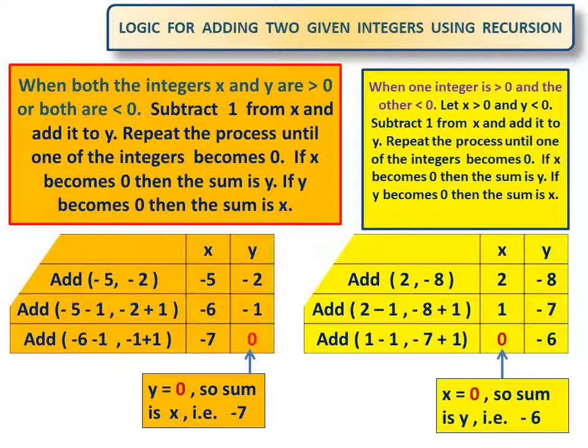Logic for adding two given integers using recursion. When both the integers x and y are positive or both are negative, subtract 1 from x and add it to y. Repeat the process until one of the integers becomes 0. If x becomes 0, then the sum is y. If y becomes 0, then the sum is x.